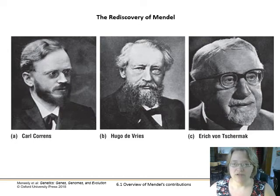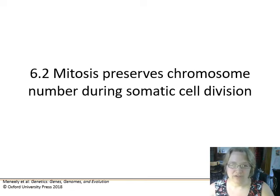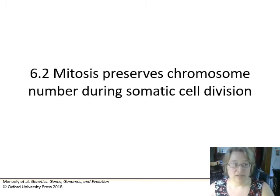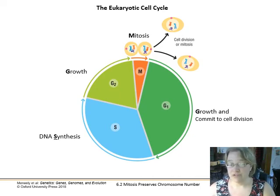Moving on to mitosis, where the chromosome number is preserved during cell division. If you start as a 2N diploid cell going into mitosis, you will have two cells coming out, and they will both be diploid with two copies of each chromosome. Mitosis is part of the eukaryotic cell cycle — prokaryotes use a different process, which we'll talk about later.